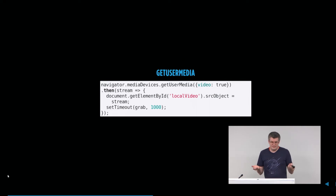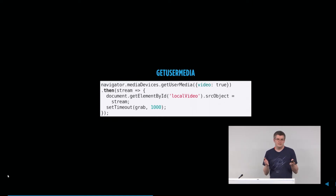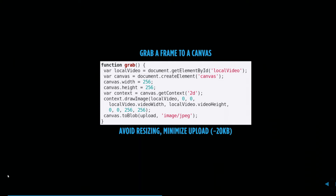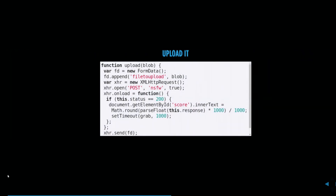The getUserMedia stuff is pretty standard these days. You call `navigator.mediaDevices.getUserMedia`, request video, attach the stream to a video element, then grab the frame. That's simple: take a local video, create a canvas, set the canvas dimensions, get a context, draw the image, and upload it to the server. If you grab a small image, it's about 20 kilobytes on average, so uploading it won't affect your WebRTC bandwidth estimate. Then you upload with XMLHttpRequest, get a result back, and display it.